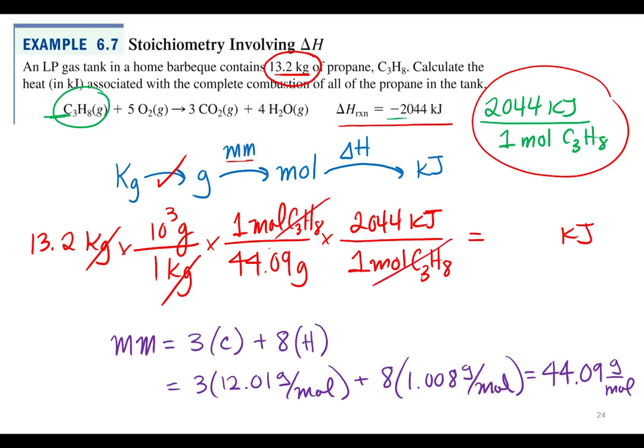Now moles cancel out and grams previously did, so I've set up my problem correctly. The only unit I have left is kilojoules, and that's what I wanted for my final answer. We take 13.2 times 1,000 divided by 44.09 times 2044, and we get 611,948. We've got to cut it down to 3 sig figs for 13.2, so that would be 612,000 kilojoules. Or in scientific notation, 6.12 times 10 to the fifth kilojoules of energy.